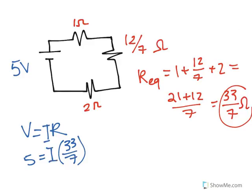Let me make sure we can tell that these are I's here. We're going to divide both sides by 33 over 7, and then our answer is the current is equal to 35 over 33 amperes.